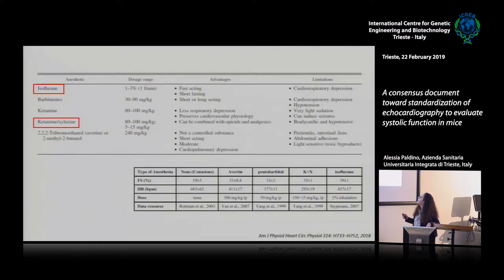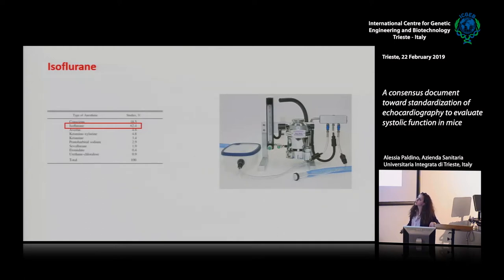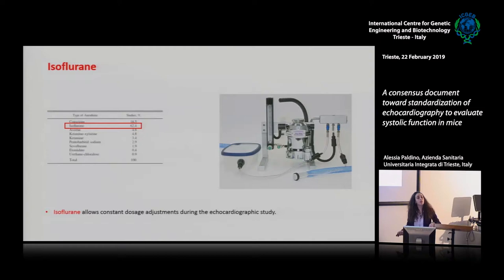The heart rate of mice treated with ketamine plus xylazine is much lower than the heart rate of mice treated with other anesthetics. So isoflurane is the most used anesthetic in echocardiographic evaluation of systolic function. We should consider that isoflurane can also affect left ventricular function, in particular after prolonged exposure. But what makes it the anesthetic of choice is the possibility to adjust the dose during the echocardiography study in response to any variation of the physiological parameters of the mouse.